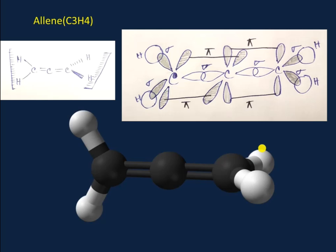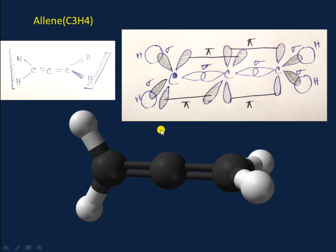Most students get confused in the structure of allene. In allene, the hydrogens at C1 and hydrogens at C3 remain in different planes and are perpendicular to each other. The hybridization of each carbon atom: C1 is sp2 hybridized, C2 is sp hybridized, and C3 is sp2 hybridized. C1 and C3 have trigonal planar orientation, but C2 has linear orientation.